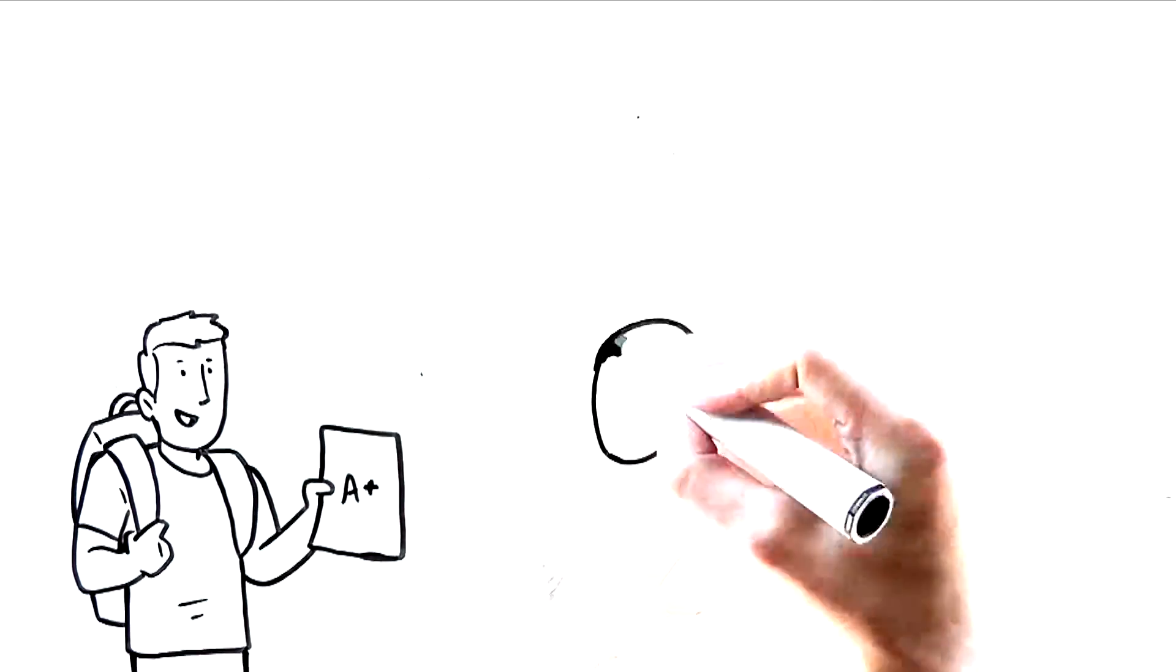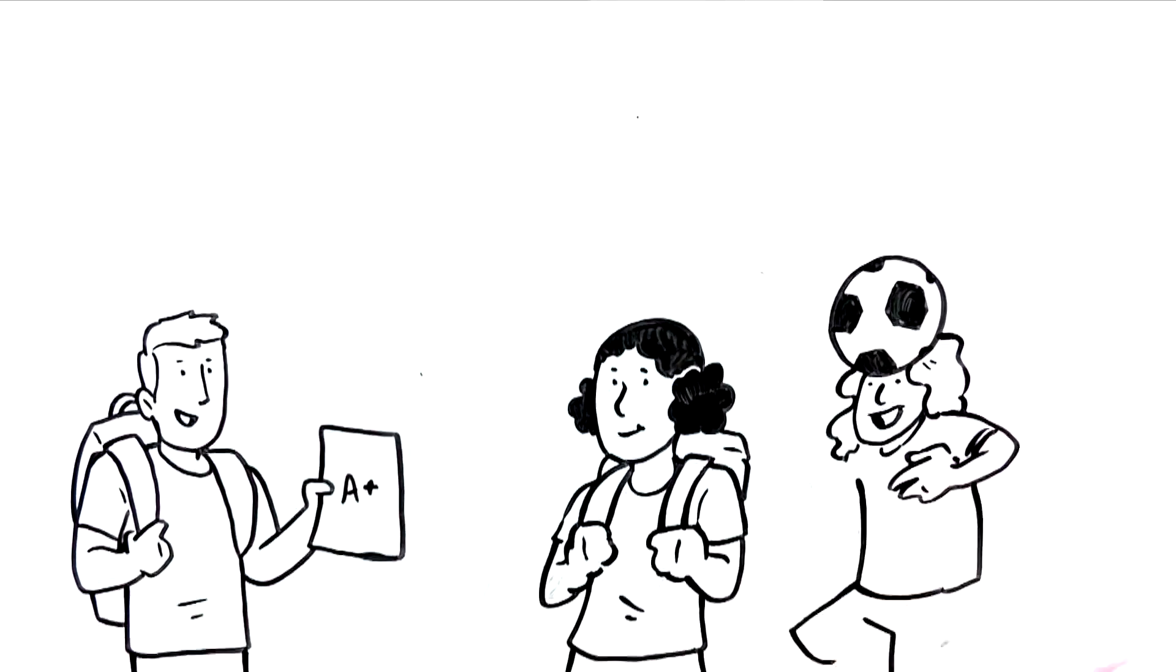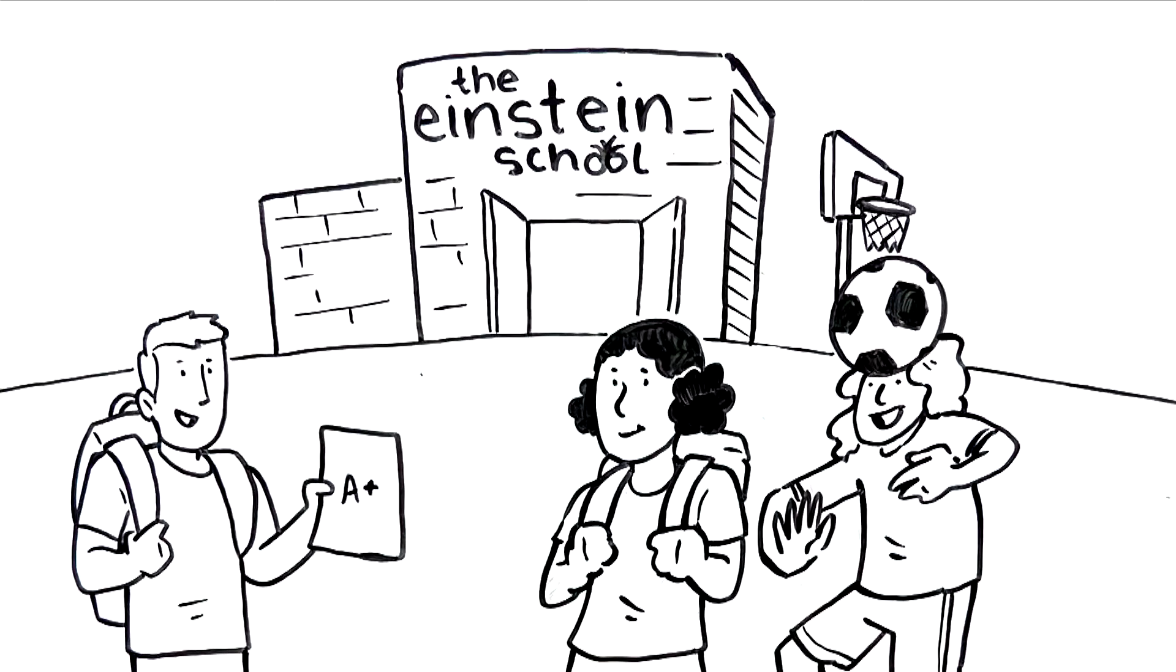What's the difference? Jen goes to a traditional school, while Julie is a student at the Einstein School, where students thrive academically and athletically.